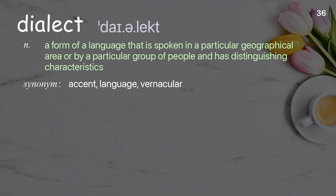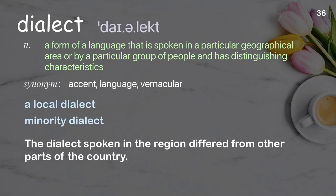Dialect: a form of a language that is spoken in a particular geographical area or by a particular group of people and has distinguishing characteristics. Examples: a local dialect; minority dialect. The dialect spoken in the region differed from other parts of the country.